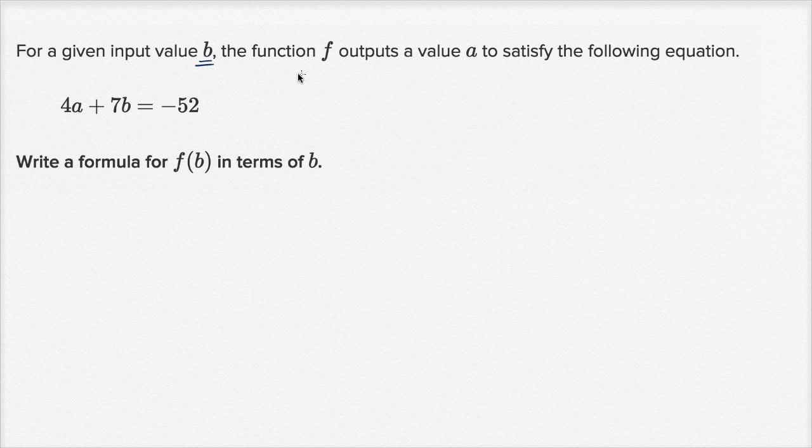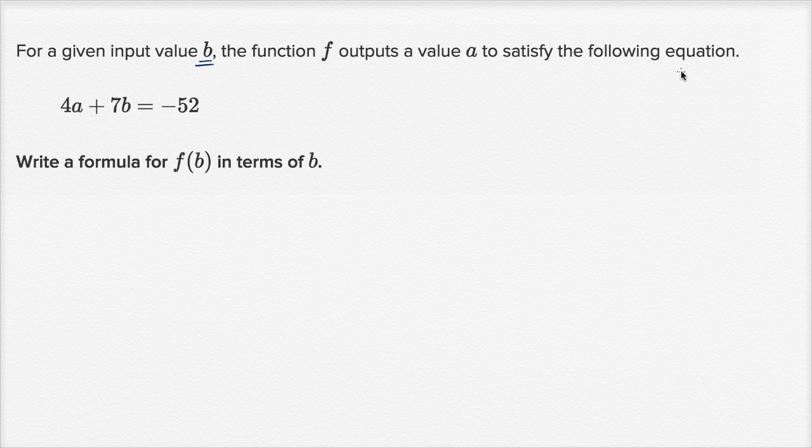For a given input value b, the function f outputs a value a to satisfy the following equation: 4a plus 7b equals negative 52.